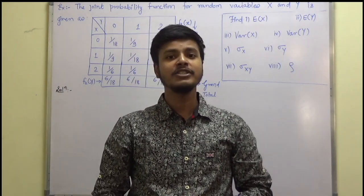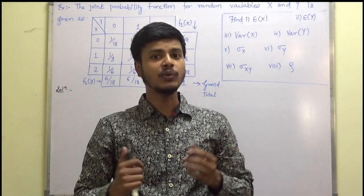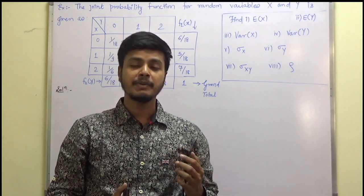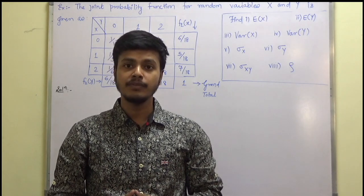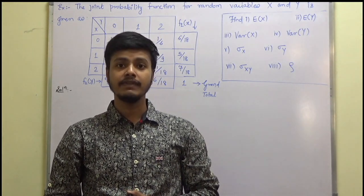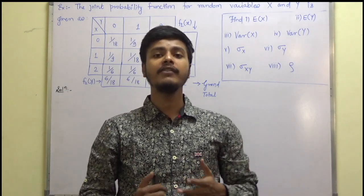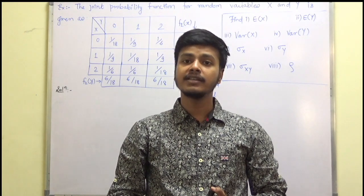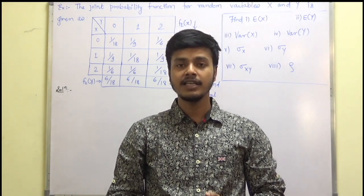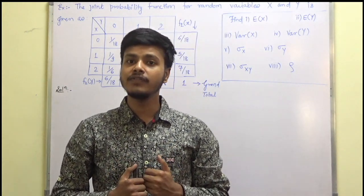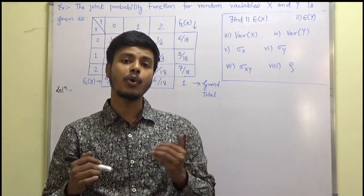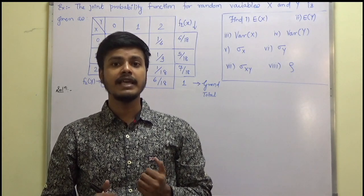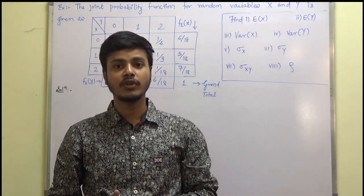Hello and welcome to this learning video. In the last learning video we started with expectation and variance for joint distribution, as well as covariance, followed by the definition of coefficient of correlation and the properties of covariance. Now in this learning video we are going to take problems on the same topic — variance, expectation, and covariance for the joint distribution.